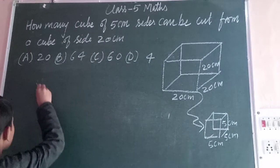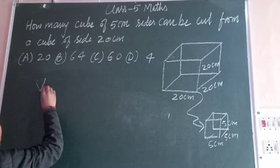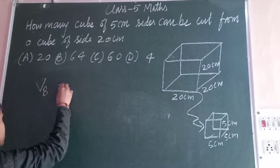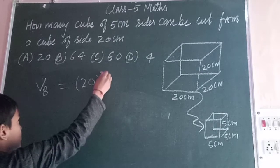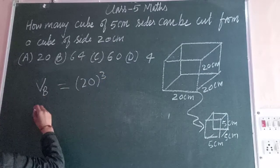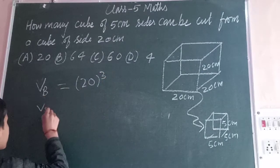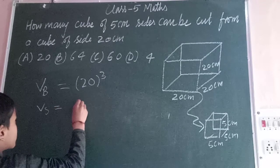So, the volume of the bigger cube is equal to 20 cubed, and the volume of the smaller cube is 5 cubed.